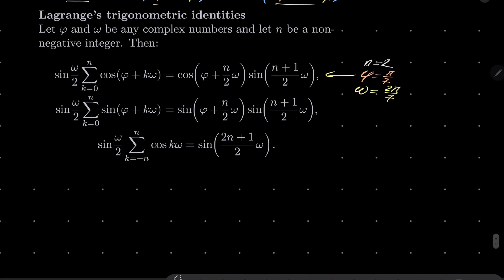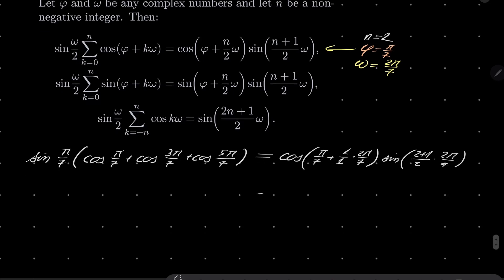we see that sine of omega over 2, so sine of pi over 7 times our sum can be replaced by cosine of pi over 7, n over 2, so it's 1 times omega times sine of n plus 1 over 2, n is 2, so we have 2 plus 1 over 2 times omega, omega is 2 pi over 7.